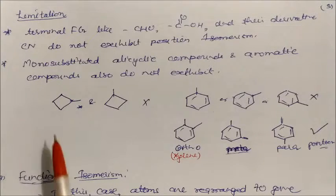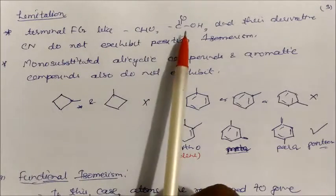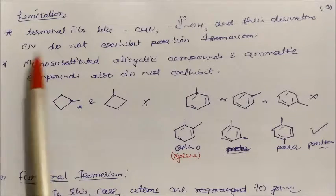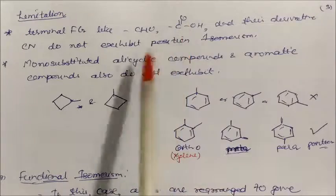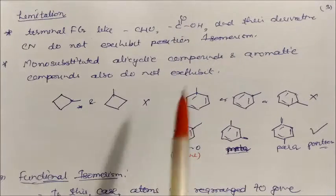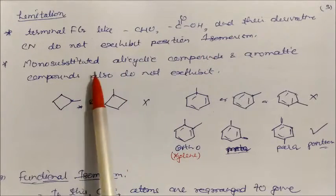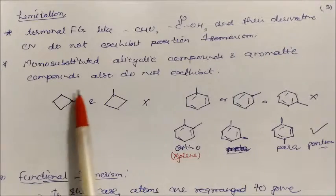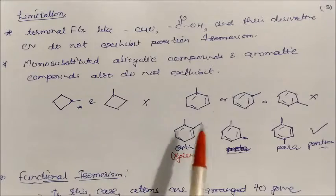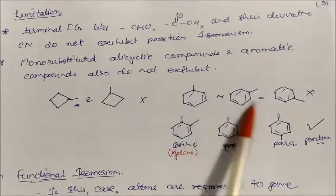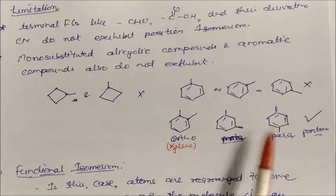There are limitations of position isomerism. Terminal functional groups like aldehyde, carboxylic acid and their derivatives (COCl, CONH2, hydrate), and cyanide (CN) do not exhibit position isomerism. Also, monosubstituted alicyclic compounds and aromatic compounds do not exhibit position isomerism.